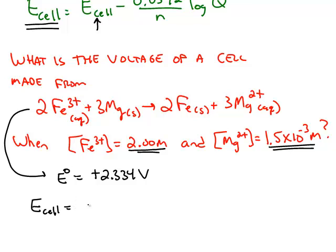Under non-standard conditions, the voltage will be the standard voltage minus the constant 0.0592 divided by n.